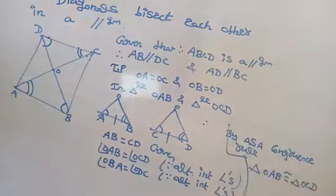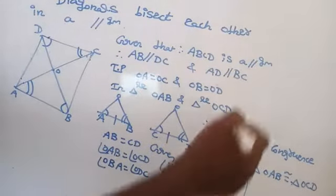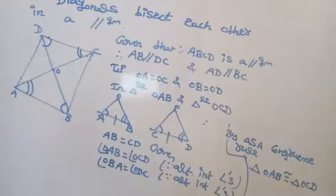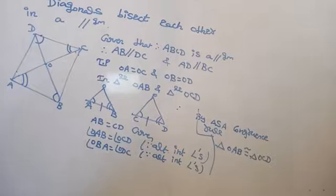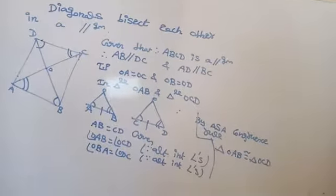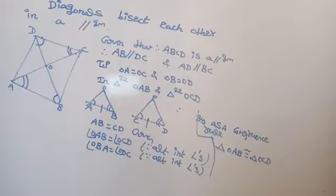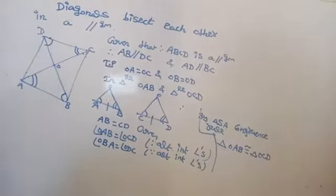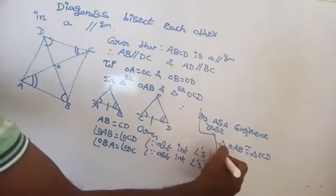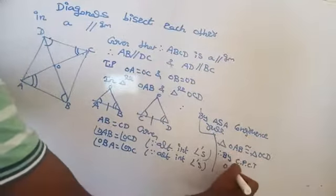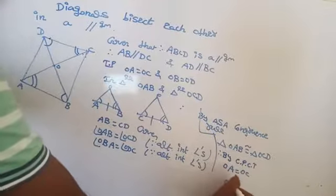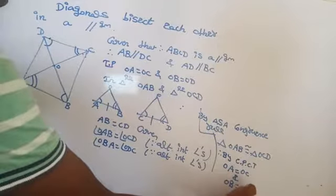Therefore, by CPCT — corresponding parts of congruent triangles — you can say that OA equal to OC and OB equal to OD.